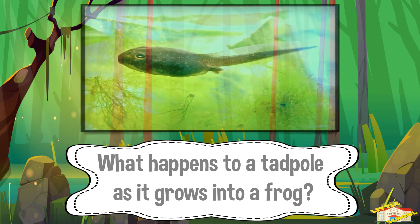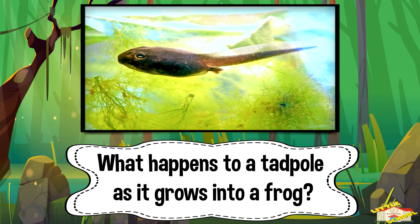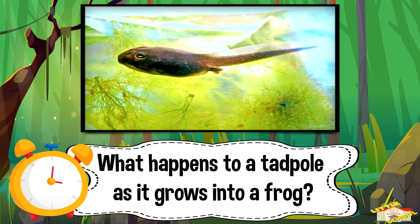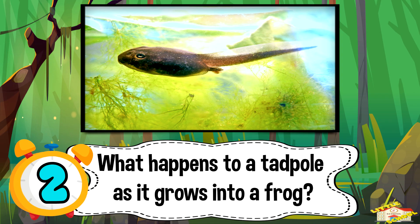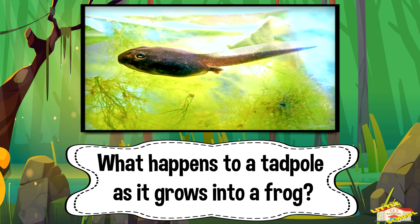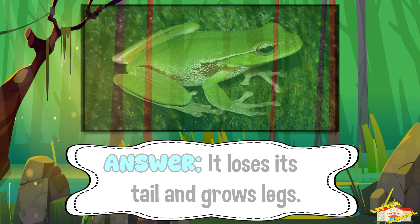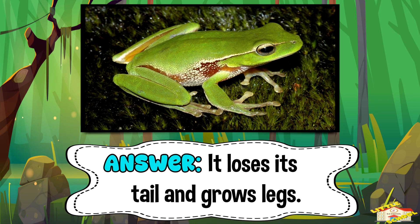Question 6: What happens to a tadpole as it grows into a frog? Five, four, three, two, one. Answer: it loses its tail and grows legs.